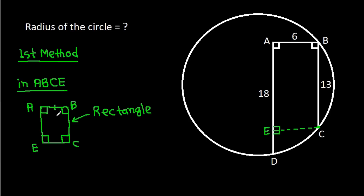So AB will be equal to CE, and AB is 6, so CE will also be 6. And BC will be equal to AE, and BC is 13, so AE will also be 13.